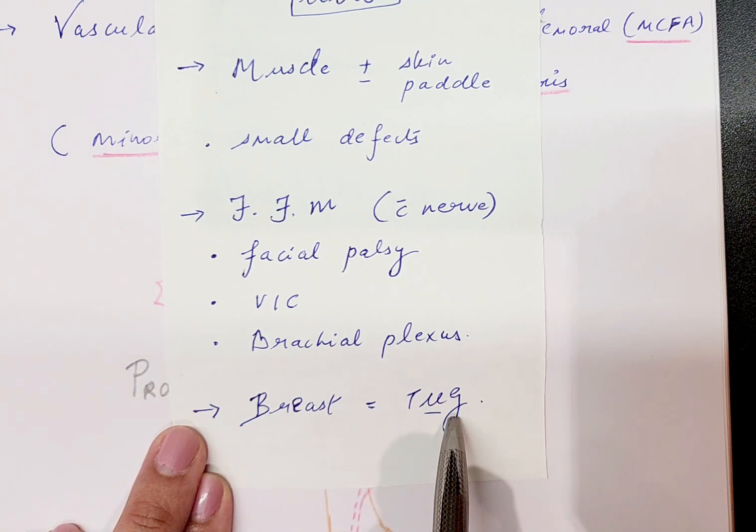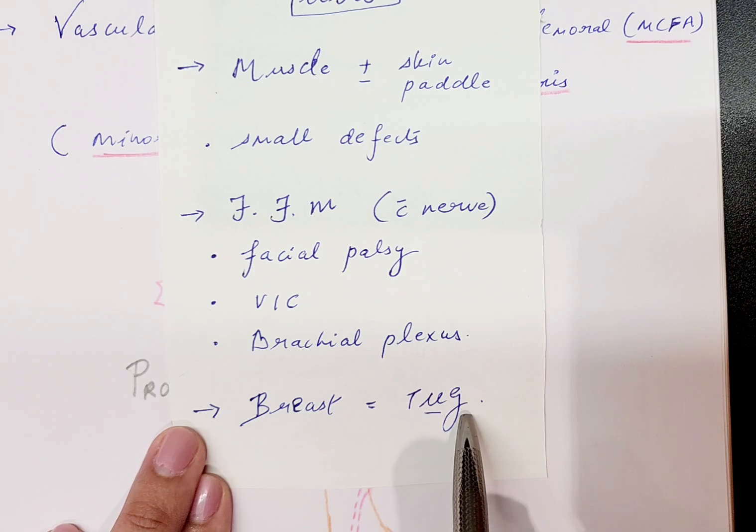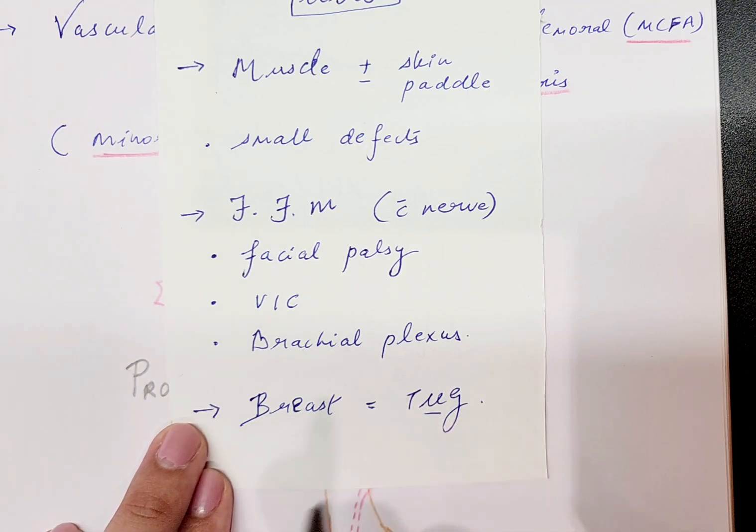It has also been used in the breast as a TUG flap, which is a transverse upper gracilis flap with a transversely oriented skin paddle. What is this TUG flap will also be discussed in the next video once we see the flap markings and the harvest of the gracilis muscle flap.